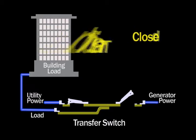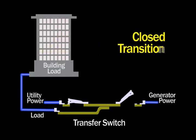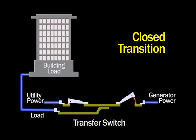Closed transition mode utilizes make before brake switching, which allows the power transition to be completed with no loss of power. The two power sources must be synchronized at the time of transfer.